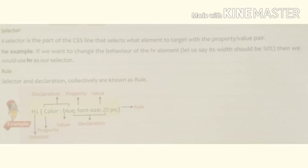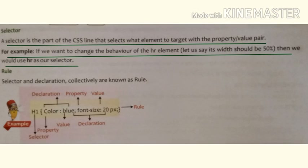Next is the selector. A selector is the part of the CSS line that selects which element to target with the property or value. For example, if we want to change the behavior of the HR element — say we want to set its width to 50% — then we should use HR as a selector.